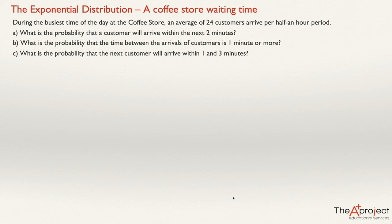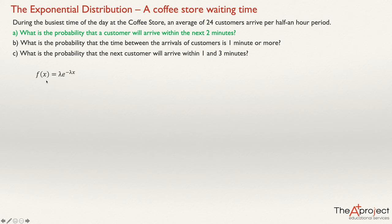Let's focus first on Question A: What is the probability that a customer will arrive within the next two minutes? Remember the formula for the probability density function for the exponential distribution: f(x) = λe^(−λx). We need to know what lambda is — it is the same Poisson mean, the average count per unit of time. Because the unit of time here is in minutes, I'm going to find the average count in minutes.